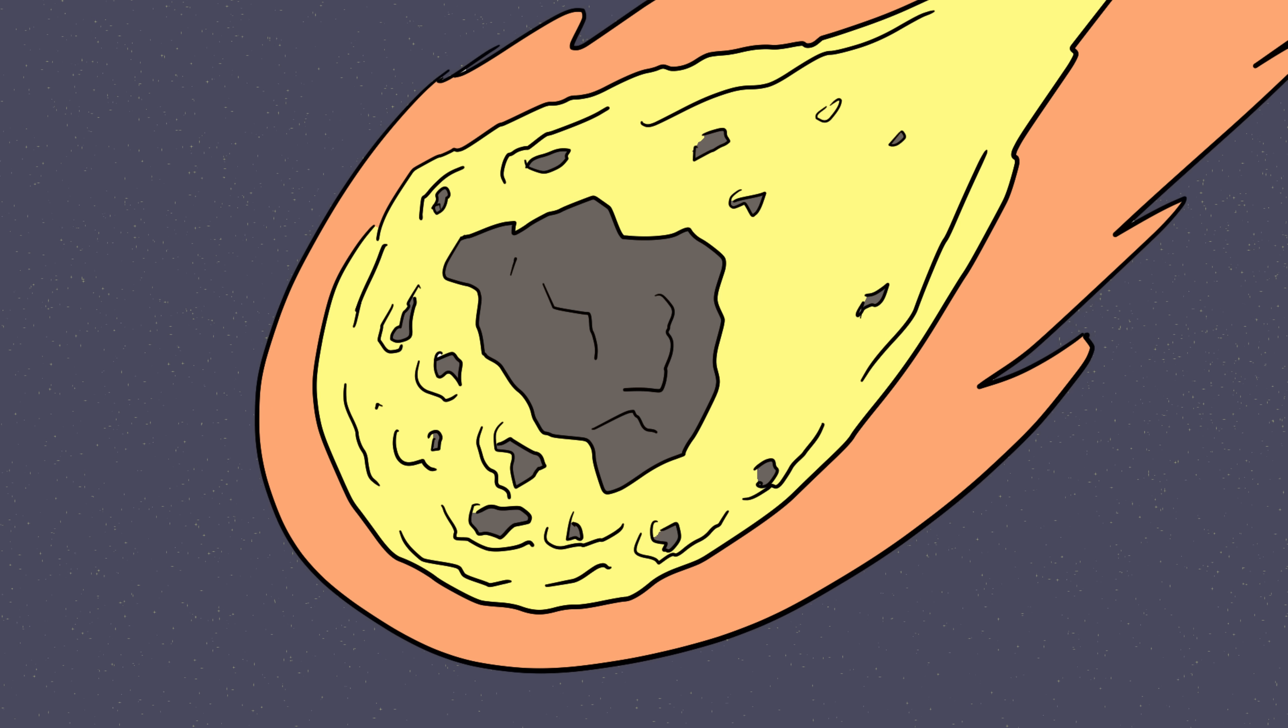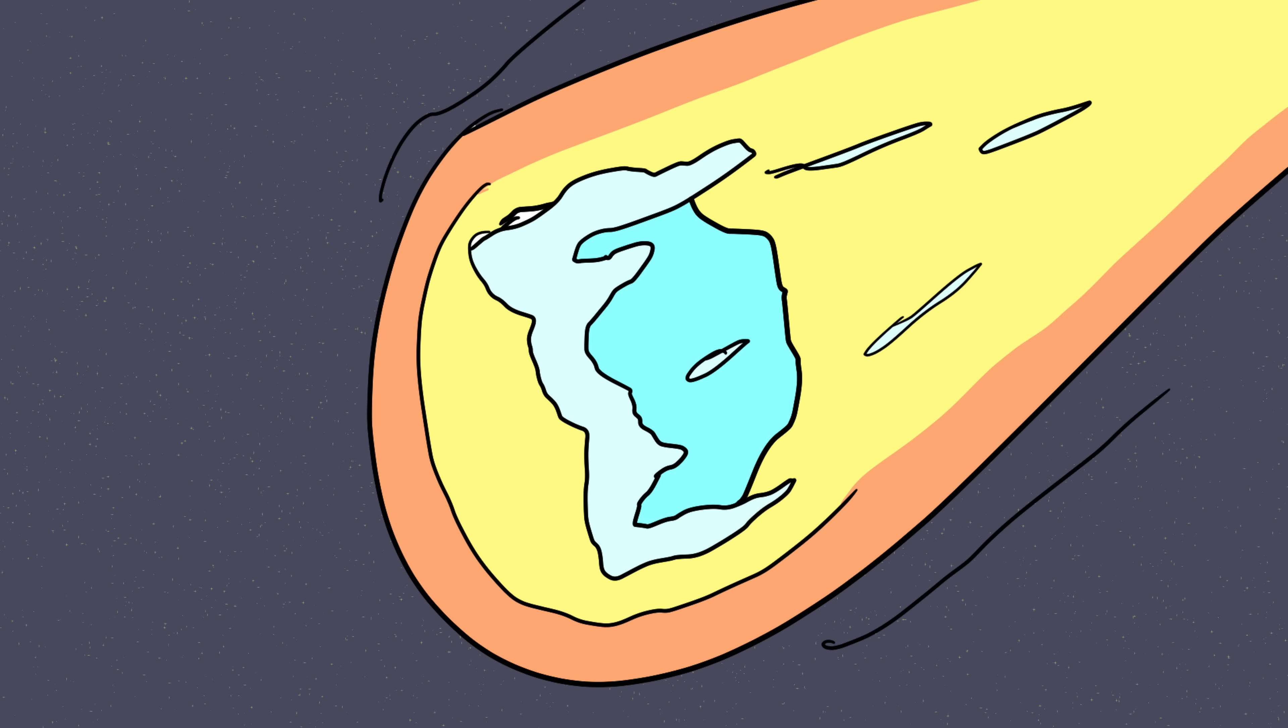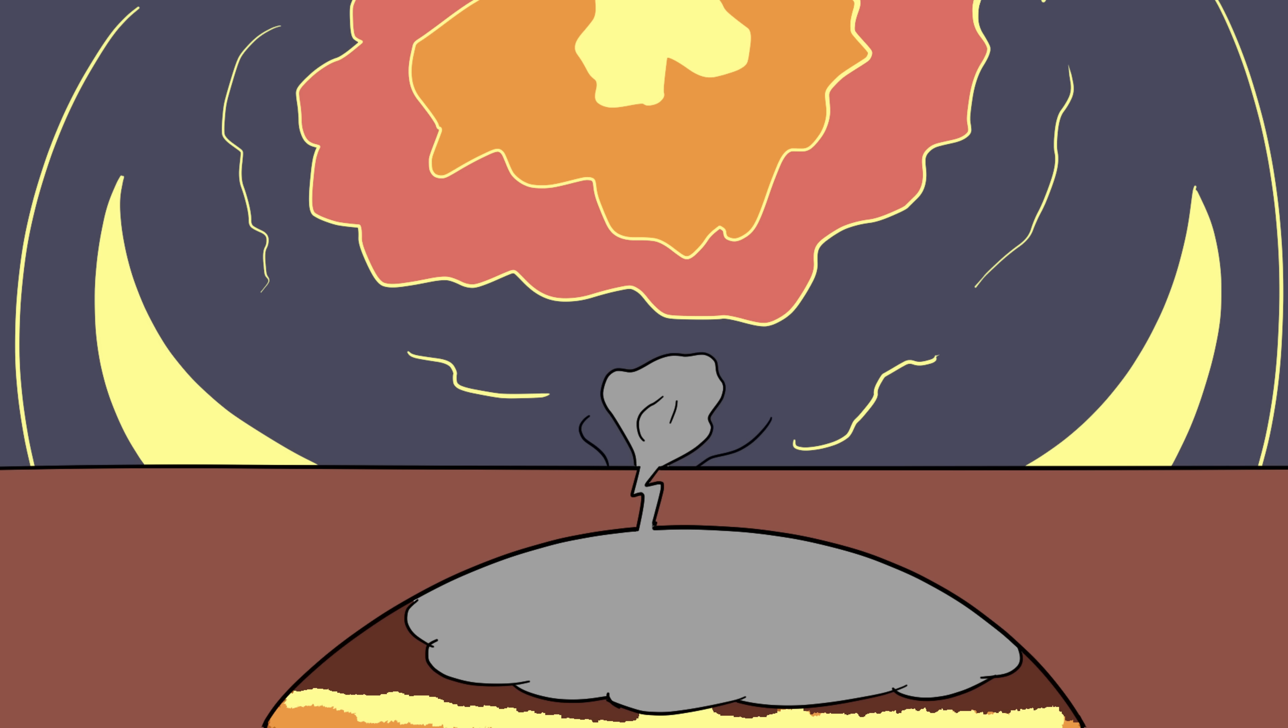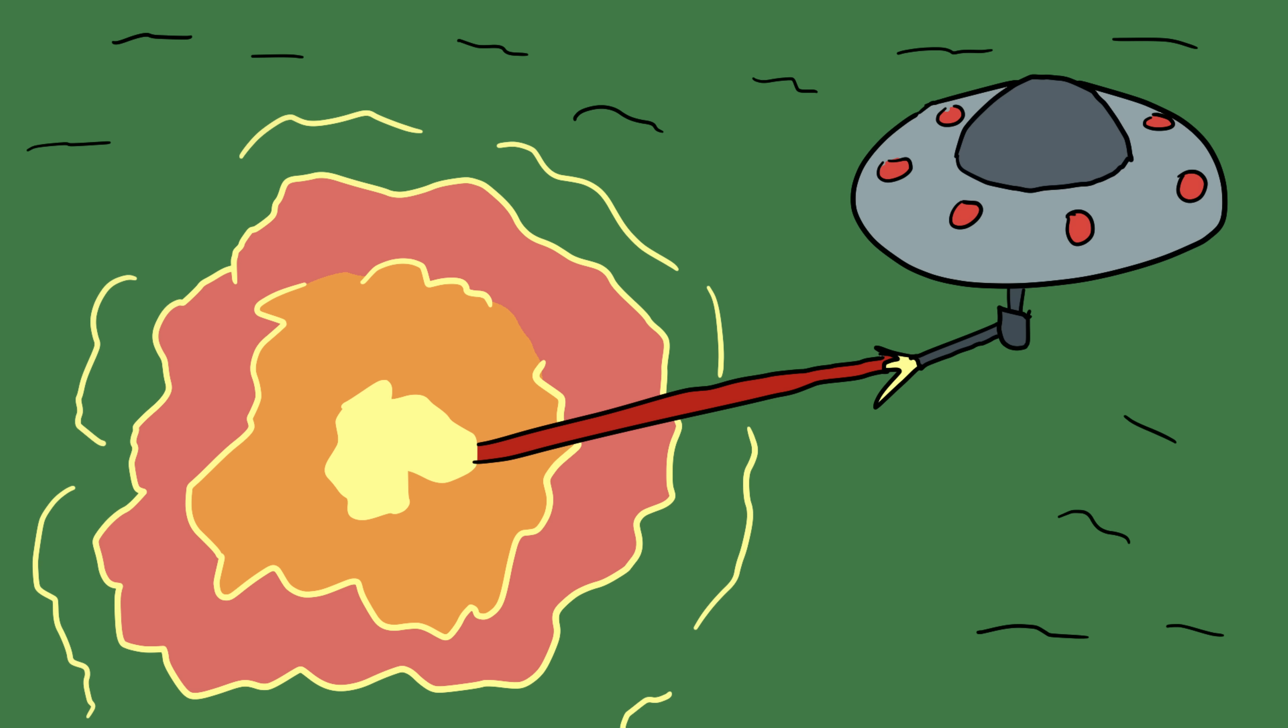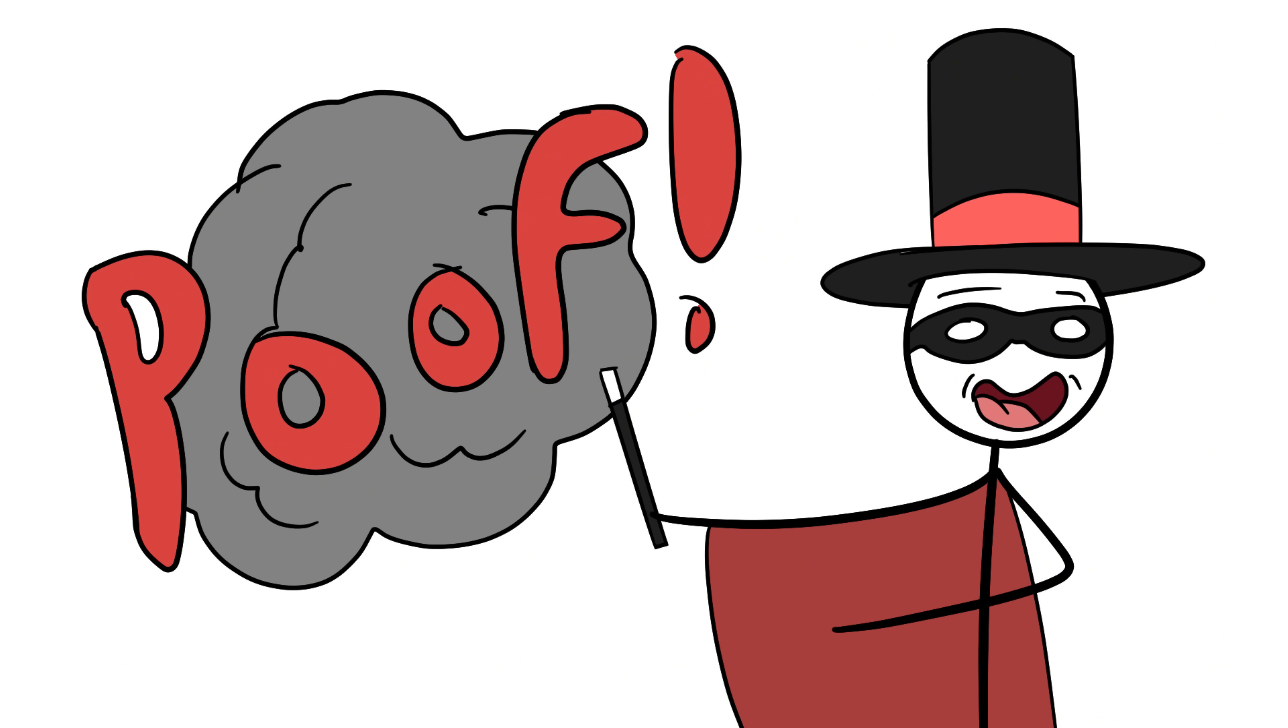Some theories suggest it was a stony asteroid that disintegrated mid-air. Others say it was a comet made of ice that left little trace. Fringe explanations have ranged from a volcanic gas explosion to, of course, alien technology. What makes Tunguska so eerie is that it's a disaster that should have left obvious geological evidence, but instead, it feels like an enormous vanishing act.